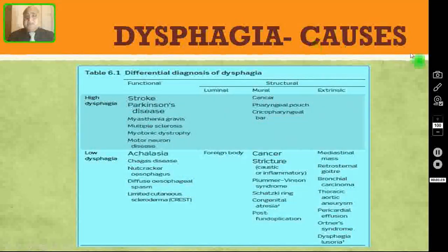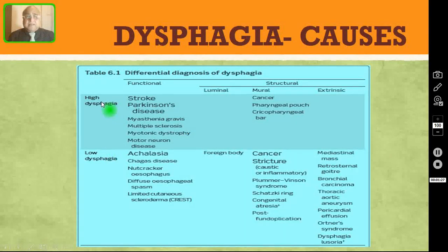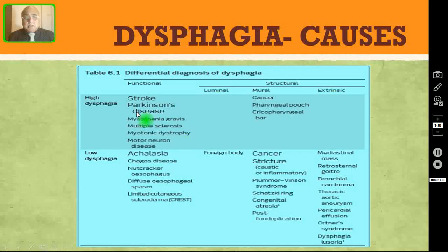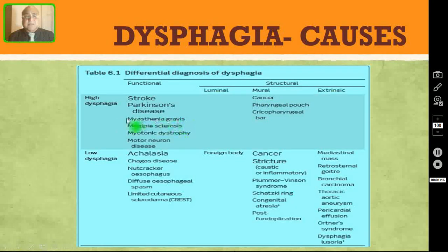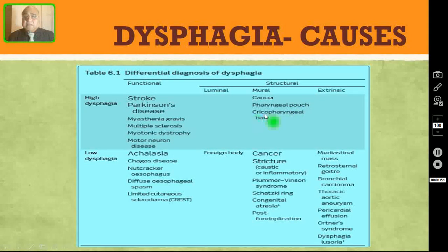Coming to the various causes of dysphagia, it is broadly divided into high dysphagia and low dysphagia. In high dysphagia, there are functional causes and structural causes. The functional causes are mainly CNS problems like stroke, Parkinson's disease, myasthenia gravis, multiple sclerosis, myotonic dystrophy, and motor neuron disease. The structural causes are mainly mural: carcinoma of the esophagus, pharyngeal pouch, and cricopharyngeal bar.